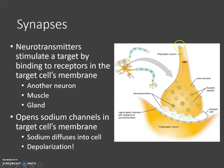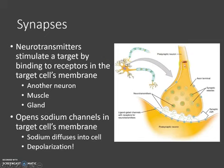Basically, depolarization through the action potential — which we also call the nerve impulse — makes its way down through the initiating neuron, which causes the release of neurotransmitters.